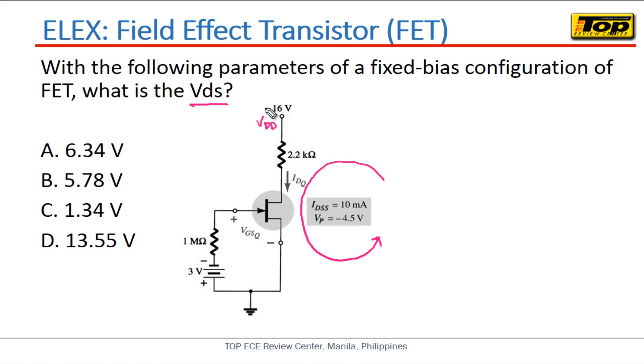Kukunin natin yung sign which is positive, so this will be positive VDD. And then ano yung magiging voltage drop across the resistor? Sabi rin sa Kirchhoff's voltage law, yung voltage drop across the resistor is also dependent on the direction of the current. If the current passing through the resistor is moving along the loop of the arbitrary loop we have created, this will give us a negative voltage drop across the resistor.